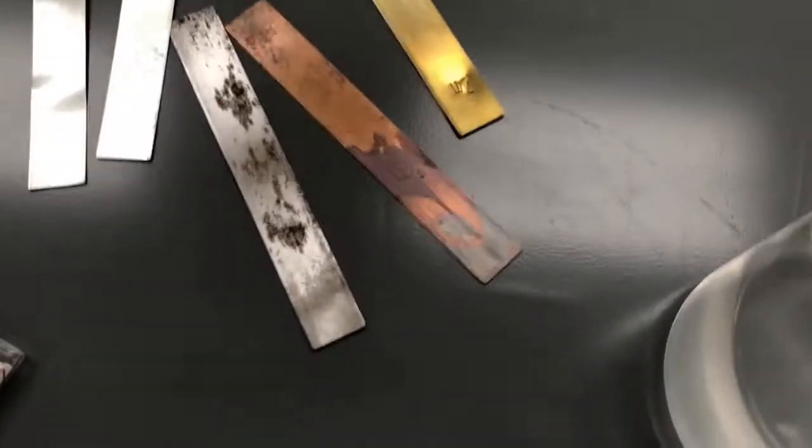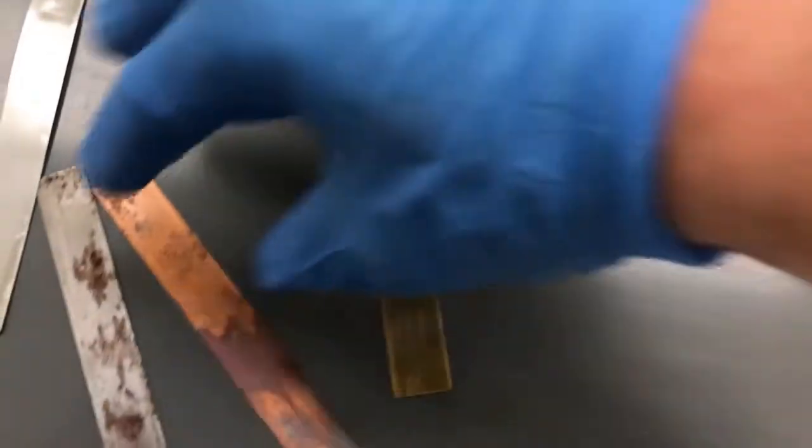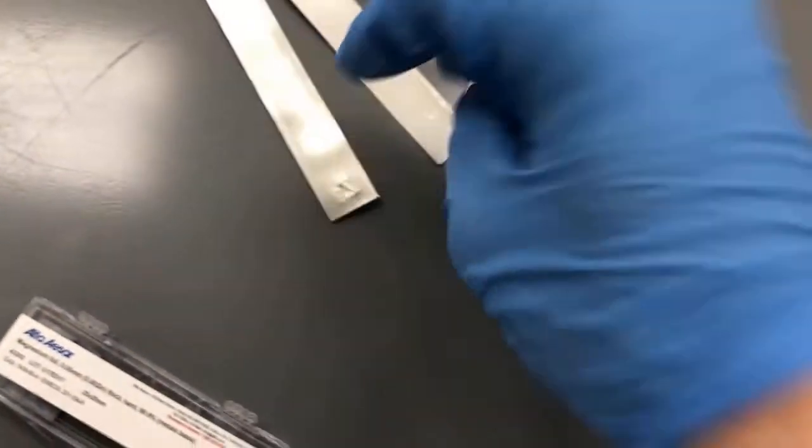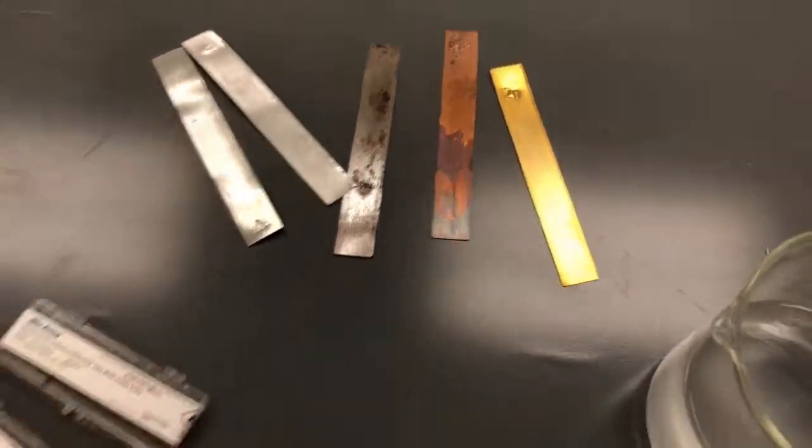I haven't cleaned these in a while, so these are the materials we're going to investigate. We have brass, which is copper and zinc. You can tell what's corroding and what's not. We have copper, iron, aluminum, and also zinc right here. We're going to clean these up and polish them with sandpaper.